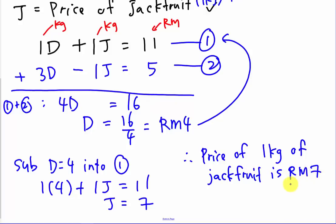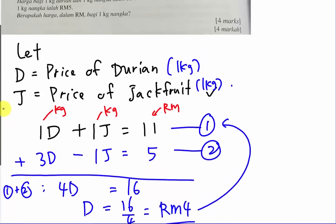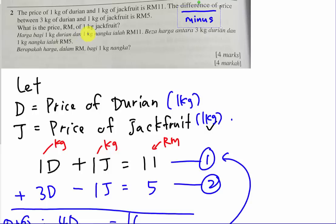If you get the answer, you can check back with the question. Assuming 1 kg of durian is RM4 and 1 kg of jackfruit is RM7: RM4 plus RM7 equals RM11 — that makes sense. For the difference: 3 kg of durian is 4 times 3 equals RM12, minus RM7 jackfruit equals RM5. So my answer is correct. The price of 1 kg of jackfruit is RM7.